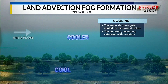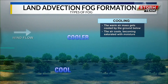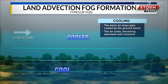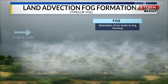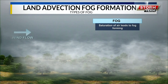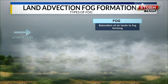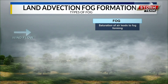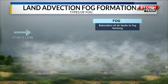Now, the cooling effect: the warm air mass gets cooled by the ground below it. The air cools, becoming saturated with that moisture, because as it flows over us, it begins to cool and pull that moisture down to the surface. As it pulls that moisture down to the surface, it raises the dew point and that saturates the air mass — the dew point and the temperature match — and that is when you get the saturation of air leading to fog formation.